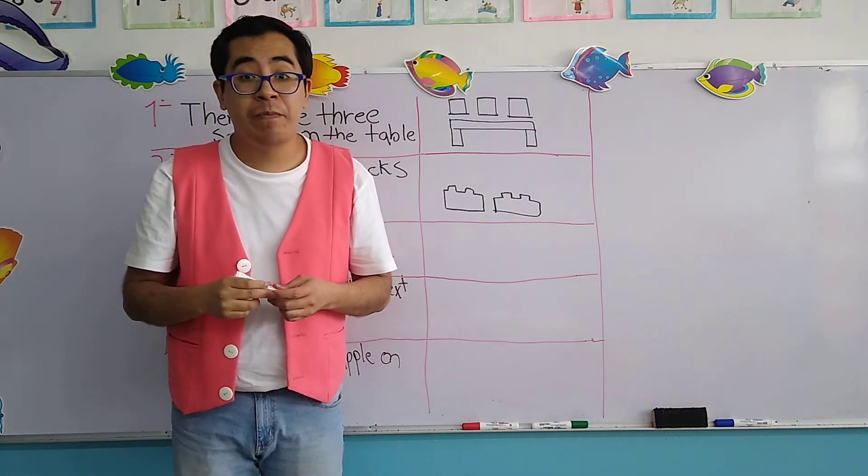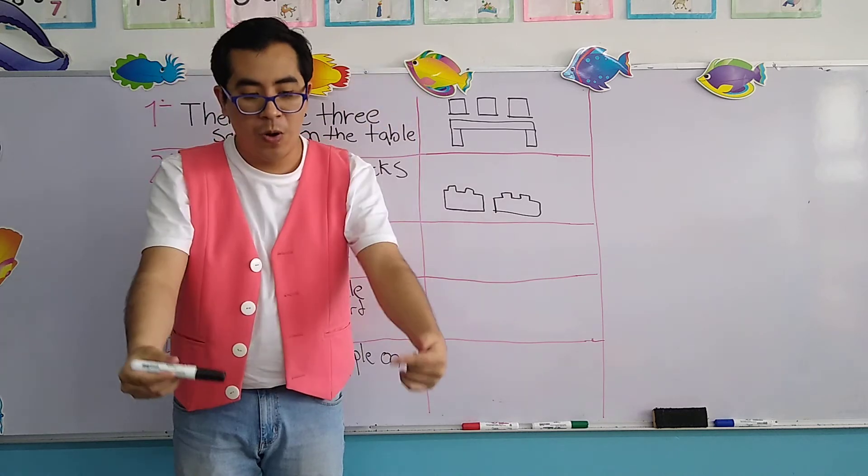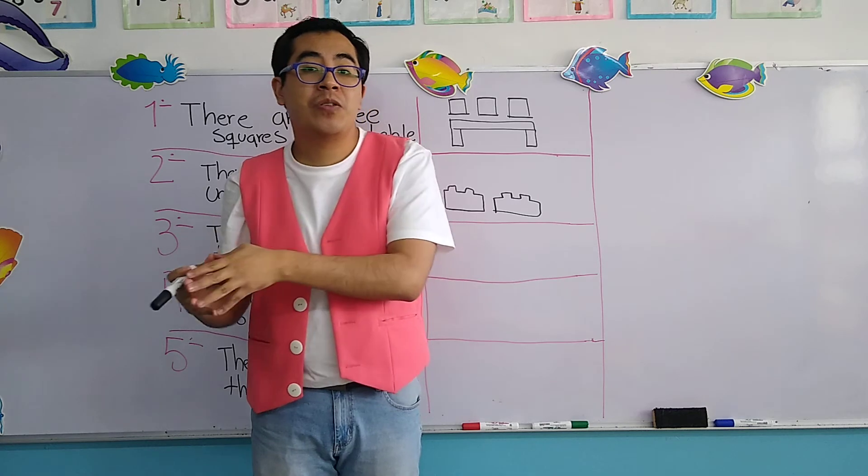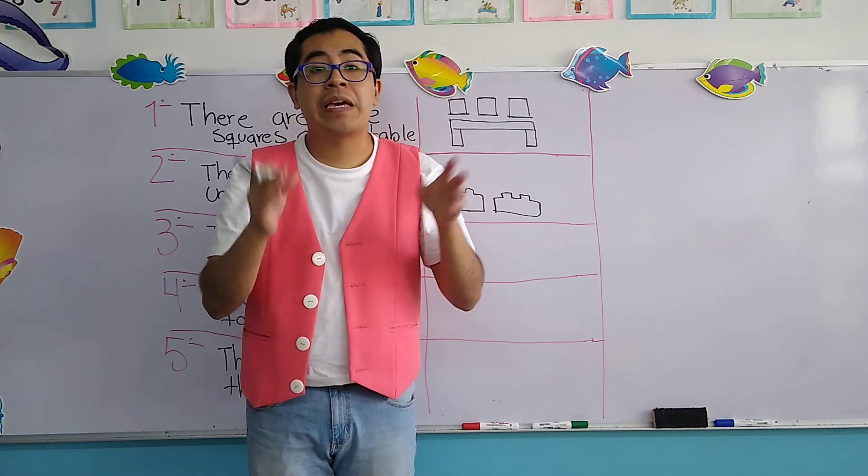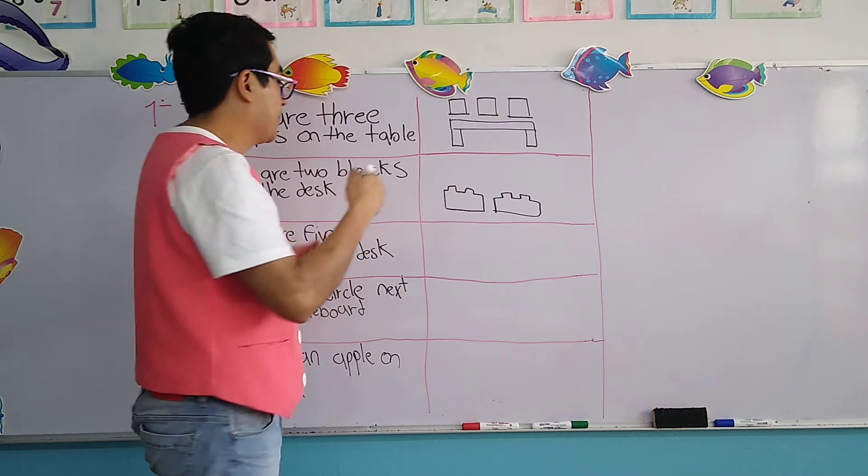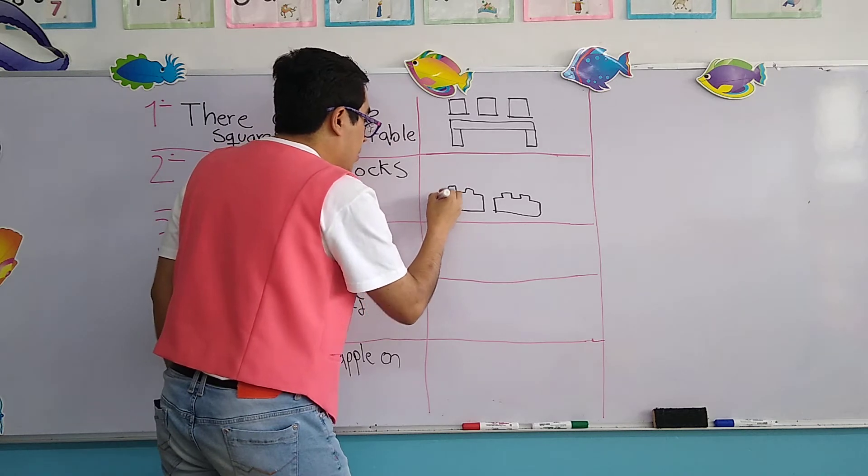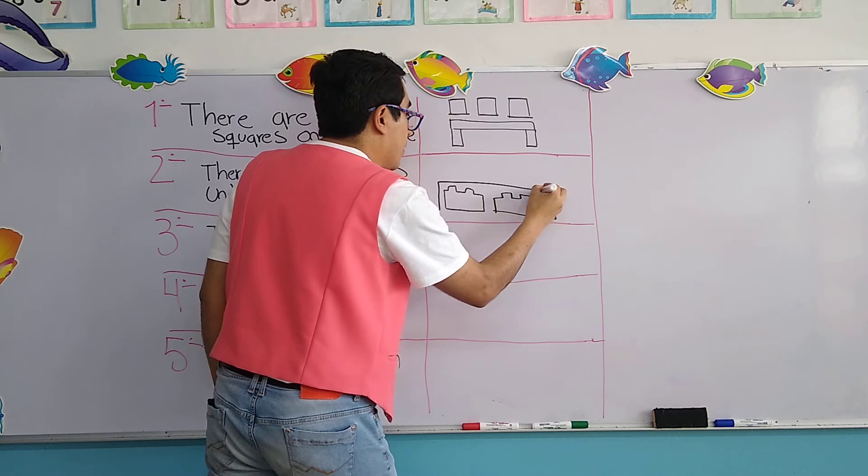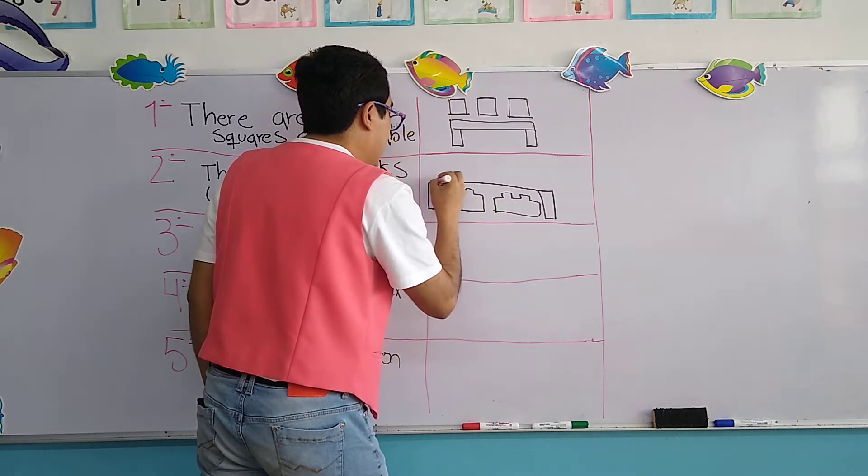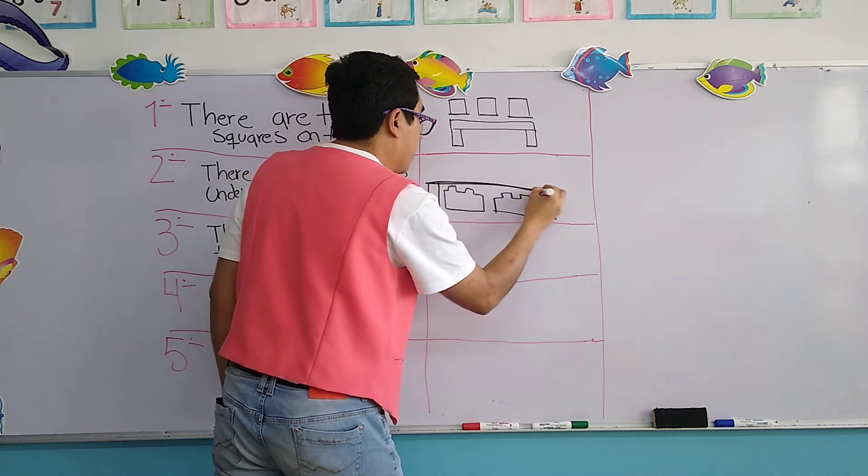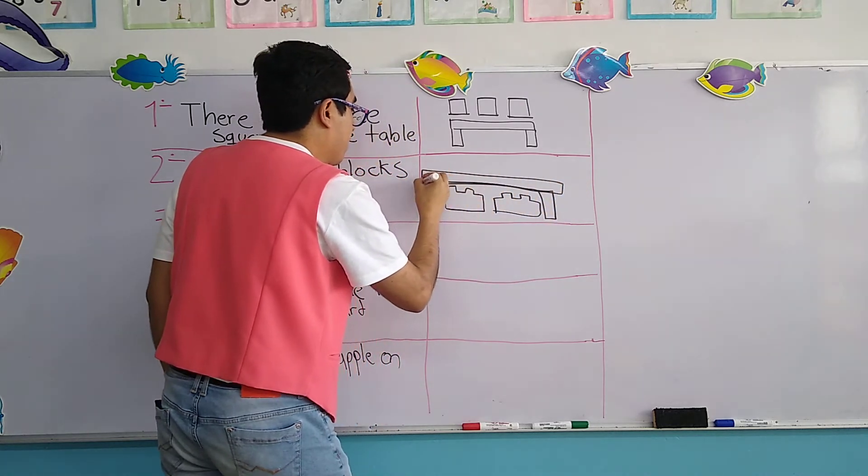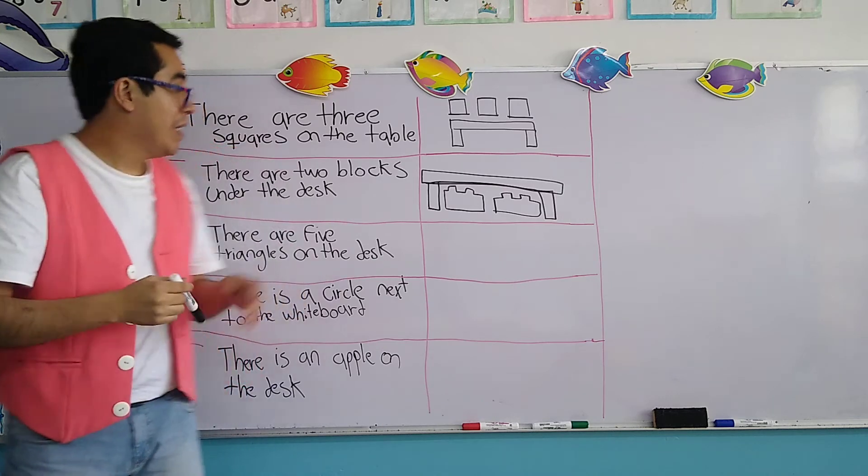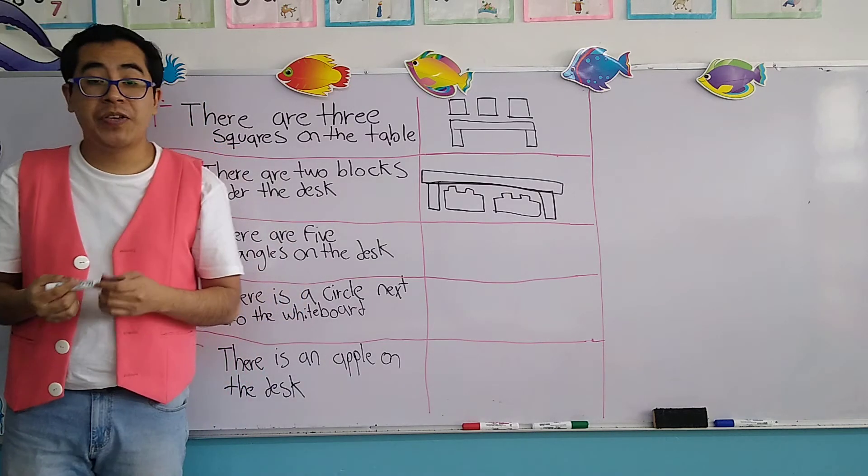Remember that the blocks, the Lego blocks, have the shape and form of a rectangle. One, two blocks under the desk. Prepositions of place, under the desk. Desk in Spanish means escritorio. And remember, a desk is like a table. So these two blocks are under the desk.